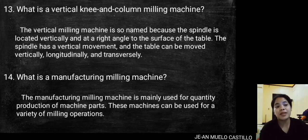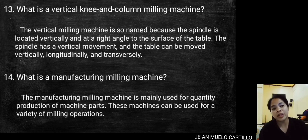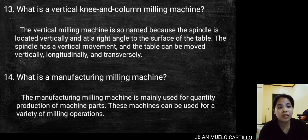What is a vertical knee and column milling machine? The vertical milling machine is so named because the spindle is located vertically and at a right angle to the surface of the table. The spindle has a vertical movement and the table can be moved vertically, longitudinally, and transversely.